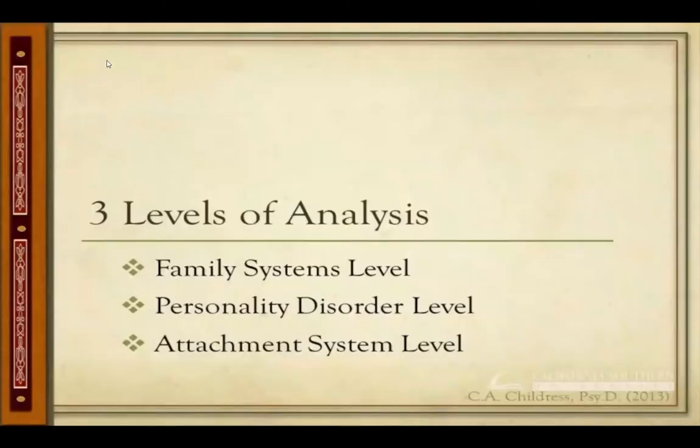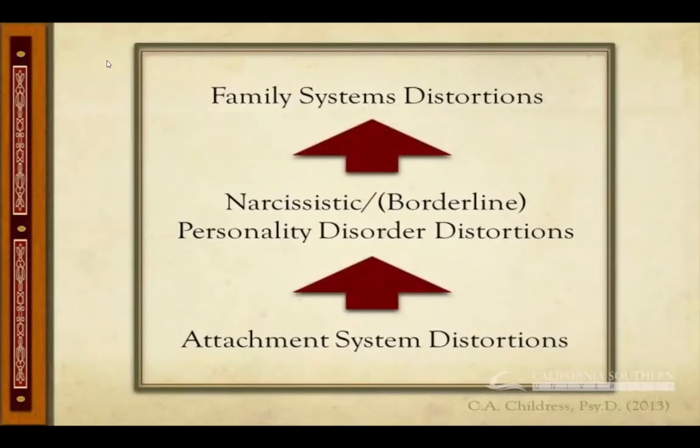In organizing the theoretical foundations, there are three levels of analysis. At the surface level, there are the family systems dynamics. Underneath those and driving them are the personality disorder dynamics. And underneath those are the attachment system problems and the attachment trauma.